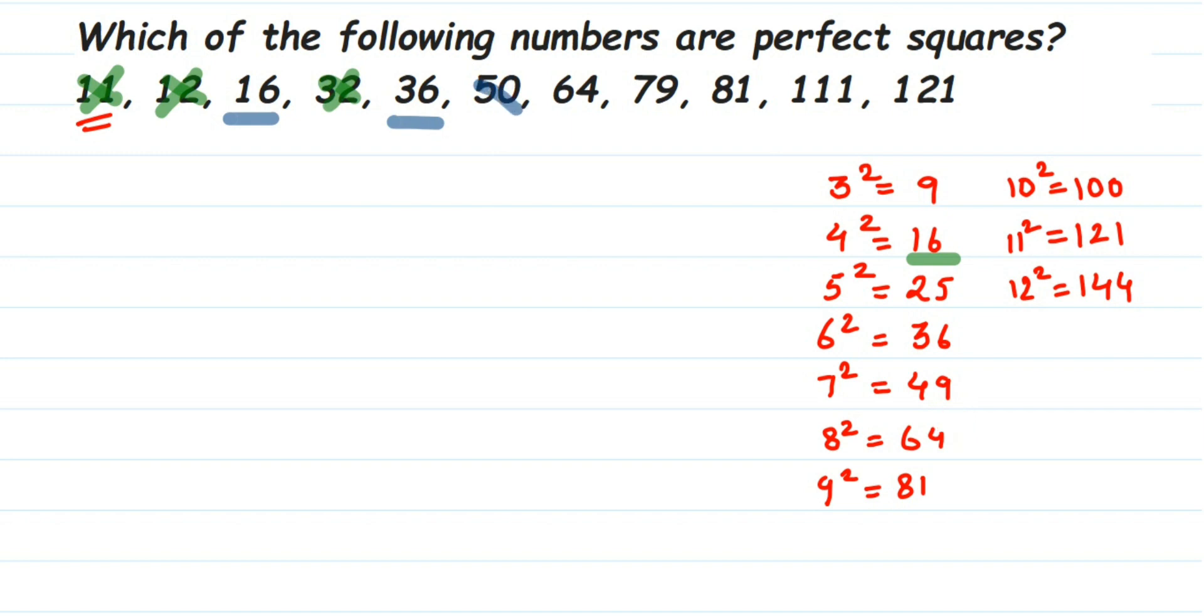After 49 the next perfect square is 64, so 50 is also not a perfect square. Next we have 64, 64 is a perfect square, 8 square is 64. Next we have 79. You can see after 64 we have 81, so 79 is also not a perfect square number.